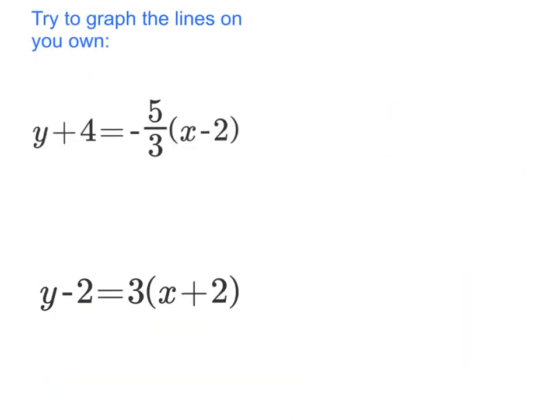You see here two example problems that I want you to try on your own. So I want you to graph these two problems in point slope form. Now I know we haven't done that yet but use what you know about the form to graph the problem. First identify the slope. Then identify the ordered pair. And with those two things you should be able to graph it. Alright, good luck.